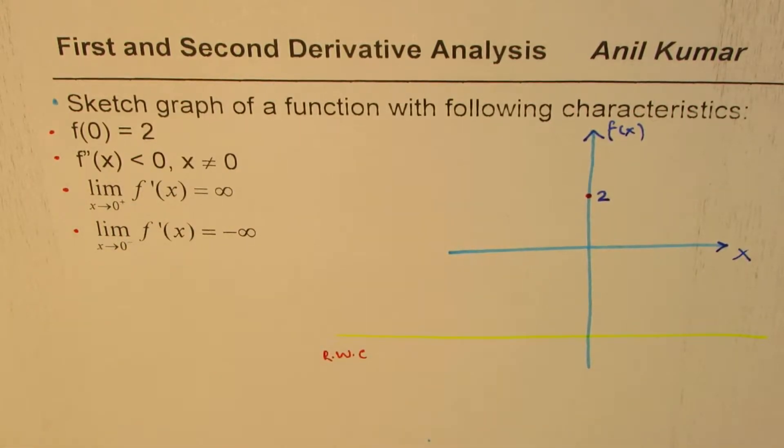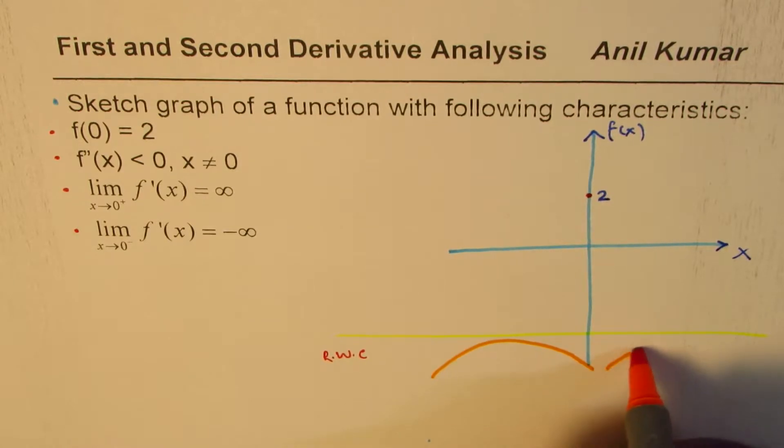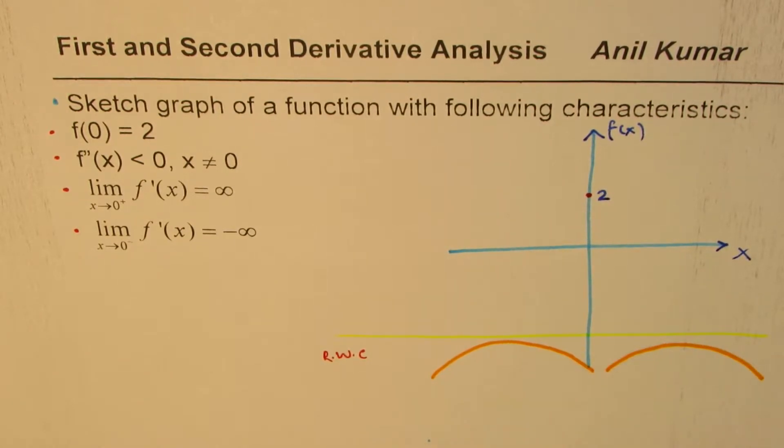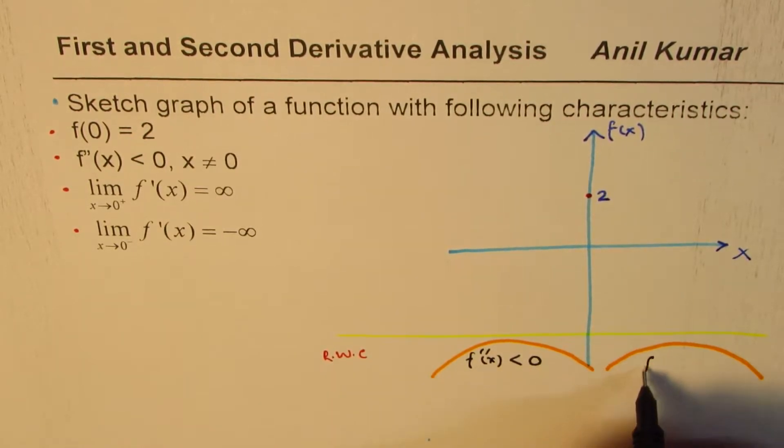If the second derivative is negative, then what kind of graph do you expect? It has to be concave down. That is the meaning of the second derivative being less than 0. That is what it means.